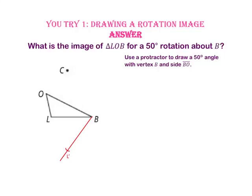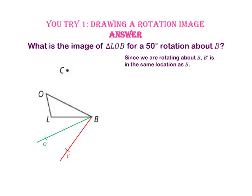Now, let's use a protractor to draw a 50 degree angle with vertex B and side BO. Use a compass to construct side BO prime that is congruent to side BO. Since we are rotating about point B, B prime is the same location as point B.